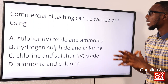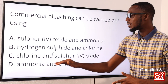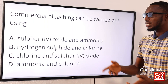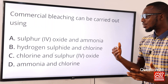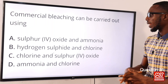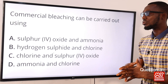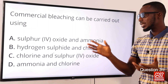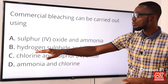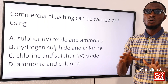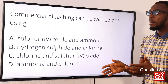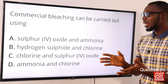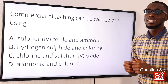Question 31: Commercial bleaching can be carried out using chlorine and sulfur dioxide — these are wonderful bleaching agents. Chlorine is used on cotton lining; sulfur dioxide is used on silk, sponges, and straws. Ammonia can be used as a solvent in laundry for removing grease and oil stains. Hydrogen sulfide is used in analysis of oils and metals. The correct option for commercial bleaching agents is chlorine and sulfur dioxide — option C.